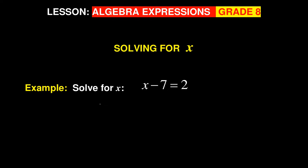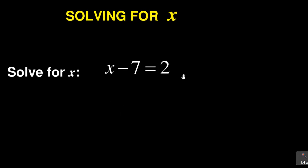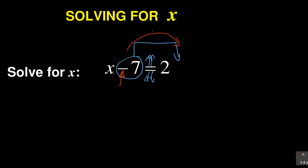If they say to you: you are given x minus seven — remember you're solving for x — and they give you x minus seven is equal to two. When they say this, it means you must remain with x on one side of the equal sign and the number on the other side. We have x on the left-hand side, so we don't want this minus seven with x. I want this minus seven to jump the equal sign, and when it jumps the equal sign it changes from negative to positive.